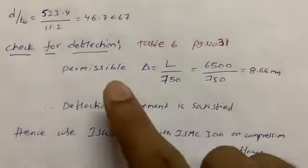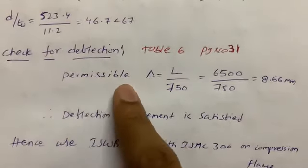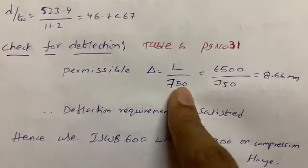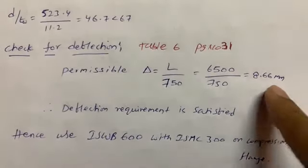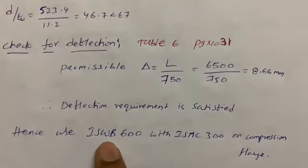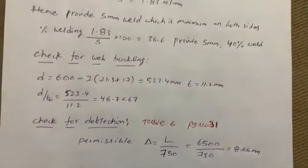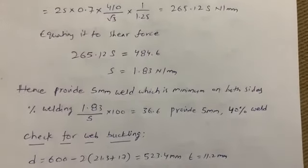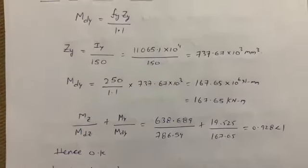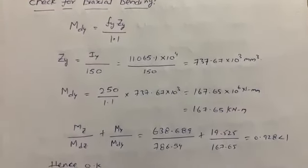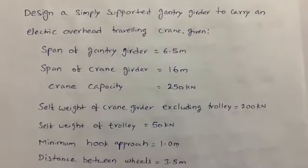Finally, the deflection check: from Table 6, page 31, the permissible deflection limit is L/750. Span = 6500 mm, so limit = 6500/750 = 8.66 mm. The deflection requirement is satisfied. Hence, use ISWB 600 with ISMC 300 on compression flange. In examinations, if all checks are specified, all steps must be completed; otherwise, calculating shear, moments, and reactions is the minimum required.